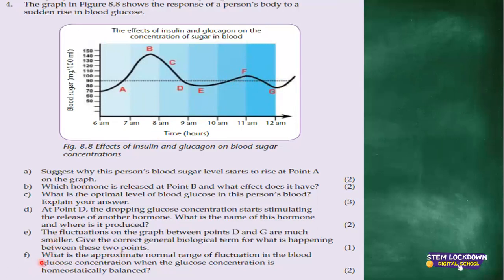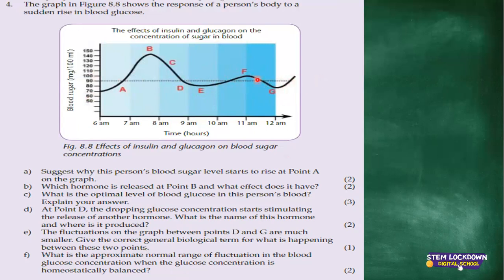Part F: what is the approximate normal range of fluctuations in the blood glucose concentration when homeostatically balanced? We can note this from points D to G. The lowest point is about G, which is around 70. The highest point should be about 100. So the normal range of fluctuations in blood glucose concentration for this person is 70 to 100 milligrams.